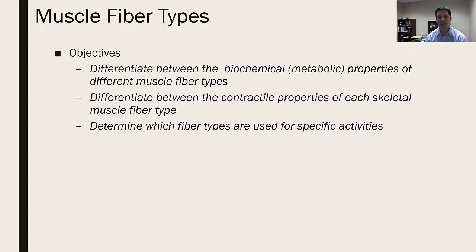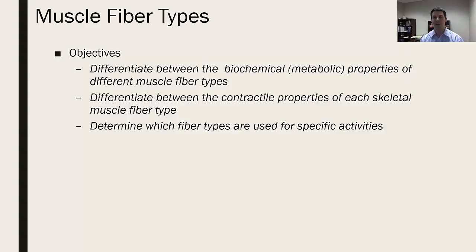The objectives for this lesson are threefold. First, I want you to be able to differentiate different fiber types and how they differ based on their biochemical or metabolic properties. We'll also work through their contractile properties of each muscle fiber, and last but not least, we'll talk about muscle fiber types and how they're used for specific activities.